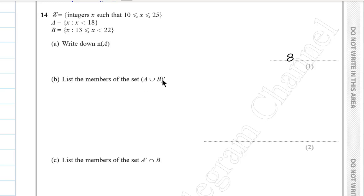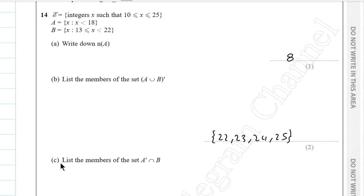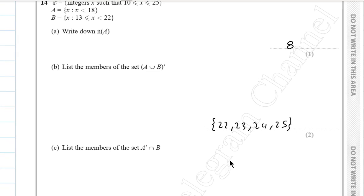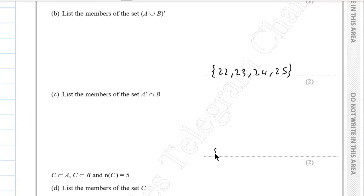Part b: list the members of (A ∪ B)'. A includes 10 to 17 and B includes 13 to 21. Their union covers 10 to 21, so the complement in the universal set is {22, 23, 24, 25}. Part c: A' ∩ B means elements in B but not in A, so starting from 18: the answer is {18, 19, 20, 21}.